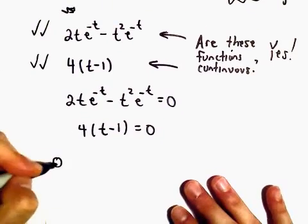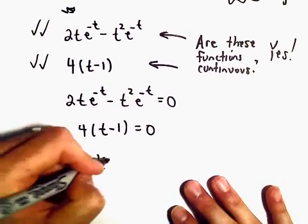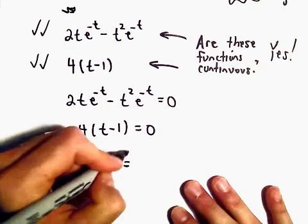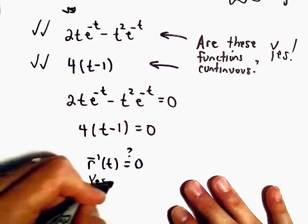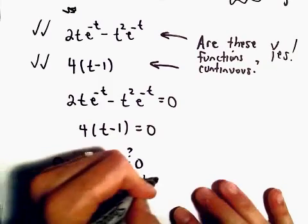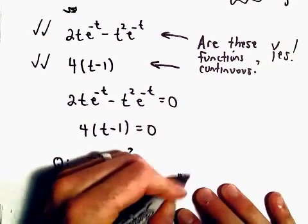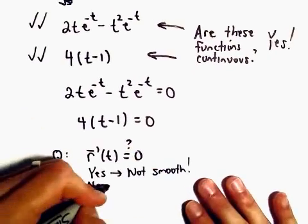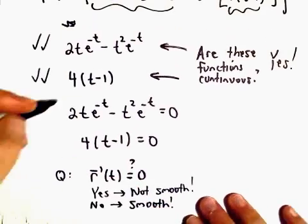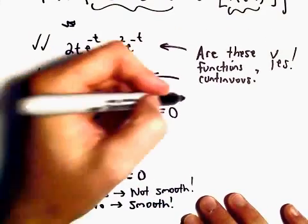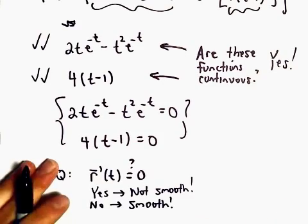The question is, are there any values of t so that r prime of t equals 0? If the answer is yes, that means the curve is not smooth. If the answer is no, that means the curve will be smooth. So we're just trying to solve this little system.